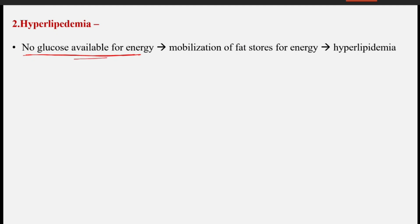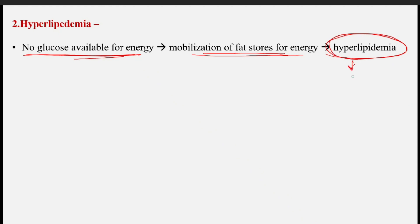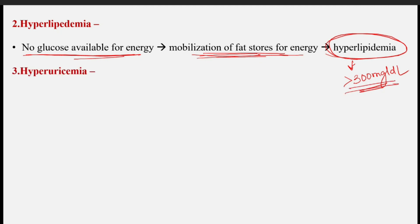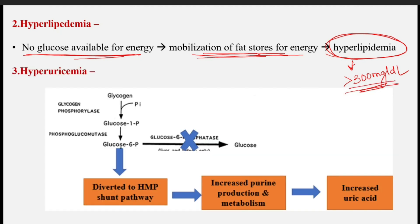Because there is no glucose available for energy, there will be mobilization of fats for energy, which causes hyperlipidemia. This is the biochemical basis for this patient having a cholesterol level of 300 mg/dL — because glucose is not available, fat stores get mobilized, which increases the cholesterol level in the circulation.